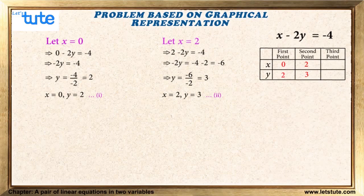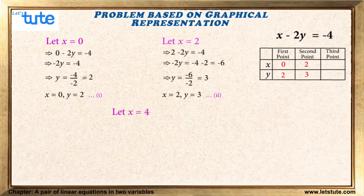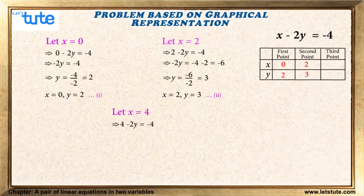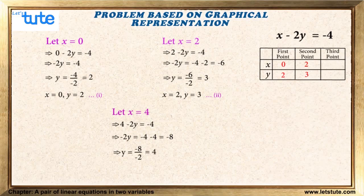Observe the pattern: when x equals 0 or x equals 2 we get whole number values for y, but when x equals 1 we get a fraction. This means we should take even numbers for x. Let x equal 4: substituting, 4 minus 2y equals minus 4, so minus 2y equals minus 8, giving y equals 4. When x equals 4, y equals 4.